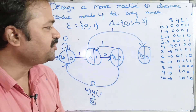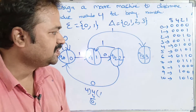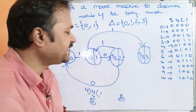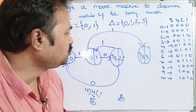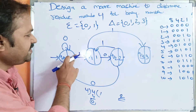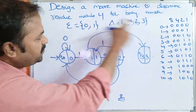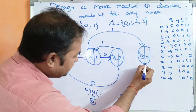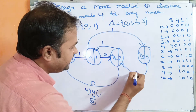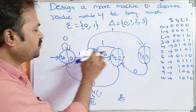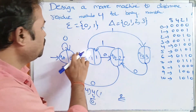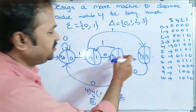For 6, which is 0110 in binary: 6 modulo 4 is 2, so we need to be at Q2. Following 0, 1, 1, 0: Q0 stays Q0 on 0, goes to Q1 on 1, Q1 on 1 goes to Q3, then Q3 on 0 goes to some state. We make the transition so that we end at Q2.